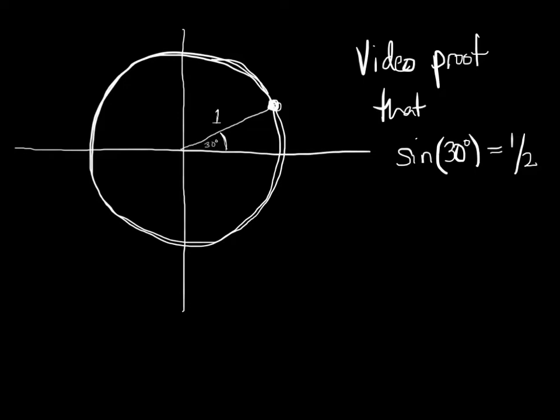Okay, we are going to do a video proof that sine of 30 equals a half. So a proof has to start with assumptions and givens and all this kind of stuff.